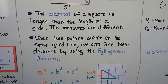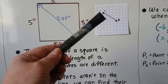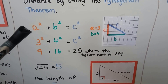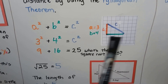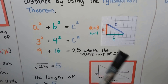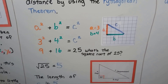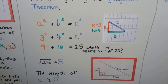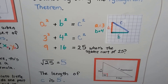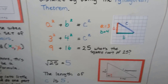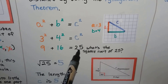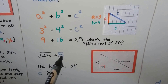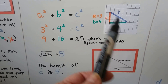When two points aren't on the same grid line, we can find their distance by using the Pythagorean Theorem. We use a² + b² = c². A squared is going to be our rise, B is going to be our run. The line we're trying to find — the blue line — is C. If a is 3 and b is 4, we do 3² + 4² = c². That gives us 9 + 16 = 25, and the square root of 25 is 5.